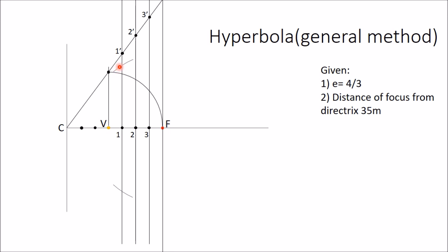Same way, with 2-2' as distance and F as center, draw arcs. This length is 2 to 2' and center is F. These arcs intersect the line from 2 at this point and at this point. So these two points also will be on the hyperbola.